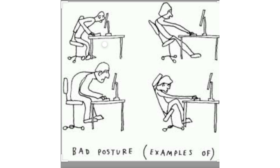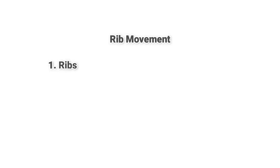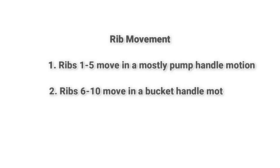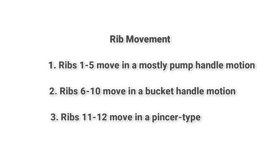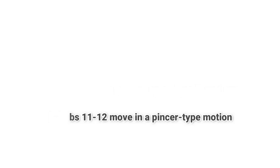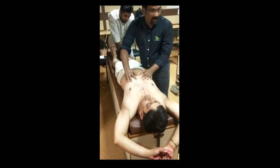Regarding how the ribs move: ribs 1 to 5 move in a pump handle motion. Ribs 6 to 10 move in a bucket handle motion. Ribs 11 and 12 move in a pincer type motion — an opposing pressure movement. This is the pattern of rib movement.